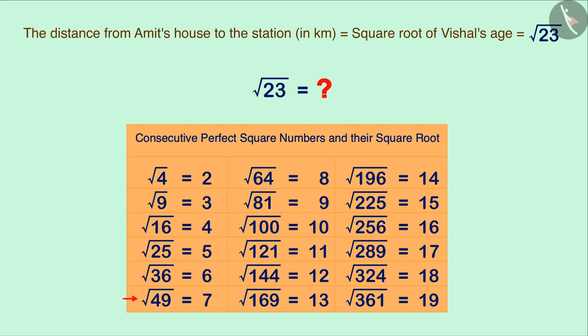In this table, look for the two perfect square numbers which have 23 between them. We observe that 23 falls between 16 and 25.